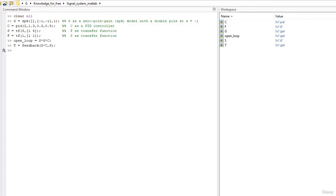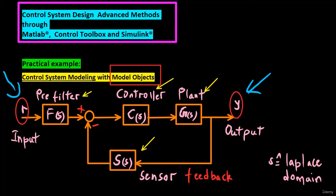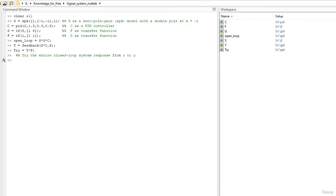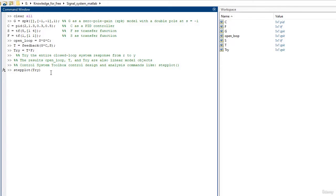To build the model of the unfiltered closed-loop response, use the feedback command. To model the entire closed-loop system response from R to Y, combine T with the filter transfer function. The results, open-loop, T, and TRY are also linear model objects. You can operate on them with control system toolbox, control design, and analysis commands. For example, plot the step response of the entire system.